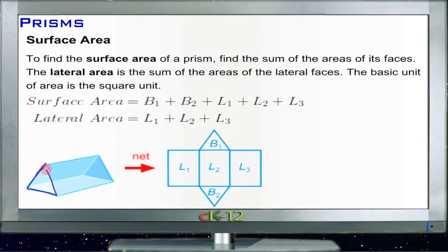For this triangular prism, we have a triangle on each end. We use our formula for finding the area of a triangle: one-half base times height, one-half bh. We're going to have that one twice.